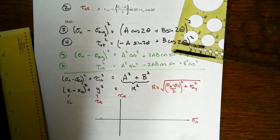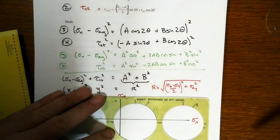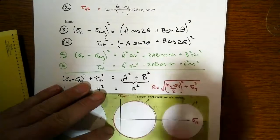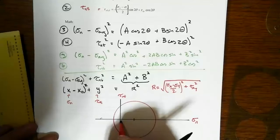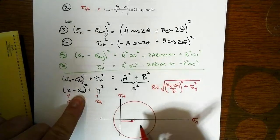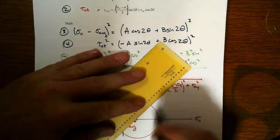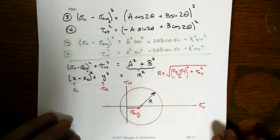And when we plot that, it's going to be a circle that is centered on the sigma axis. And its center is shifted over from the origin of the whole coordinate system by X naught, which turns out to be sigma average. And there's your radius.